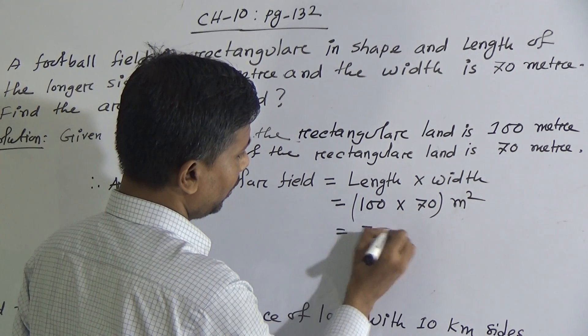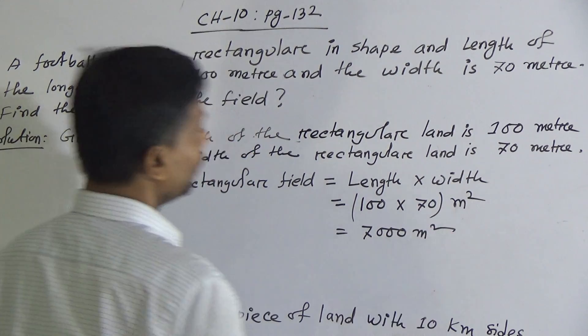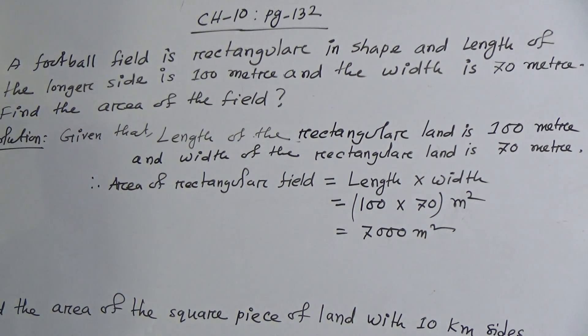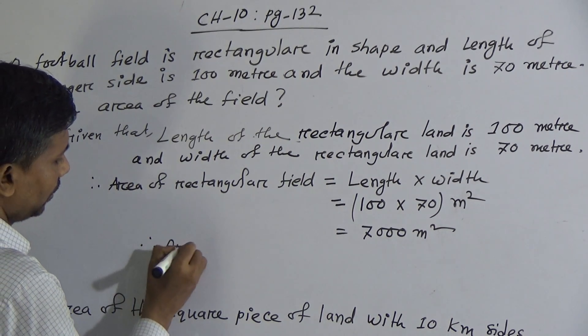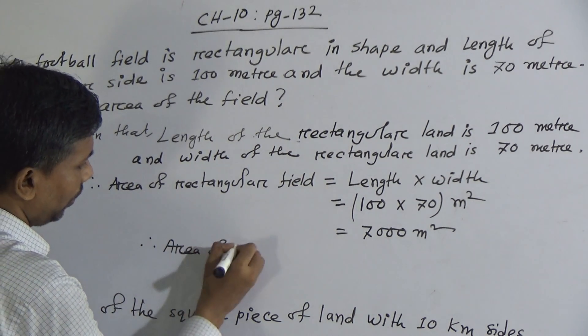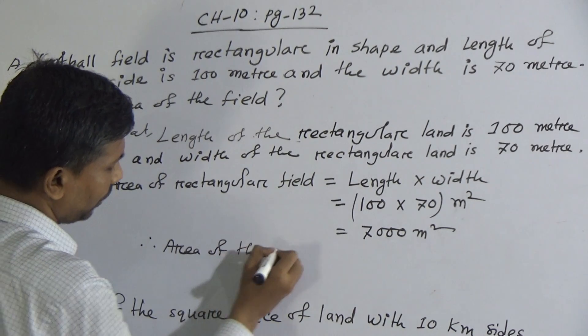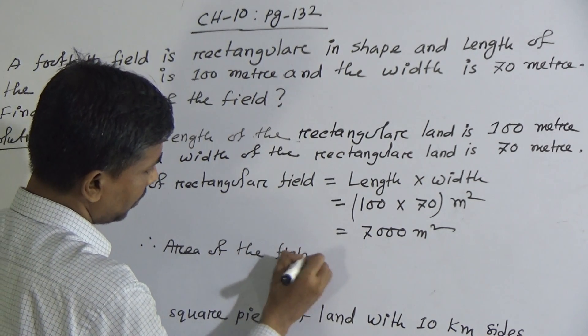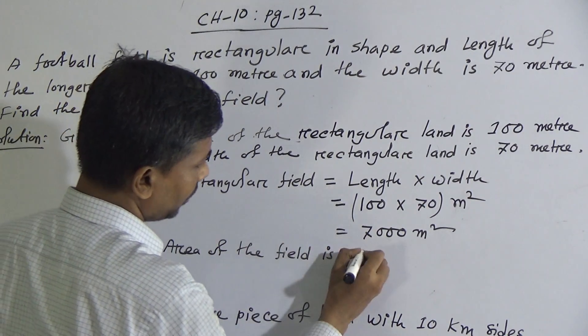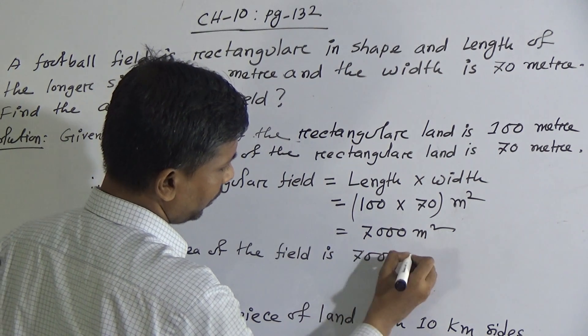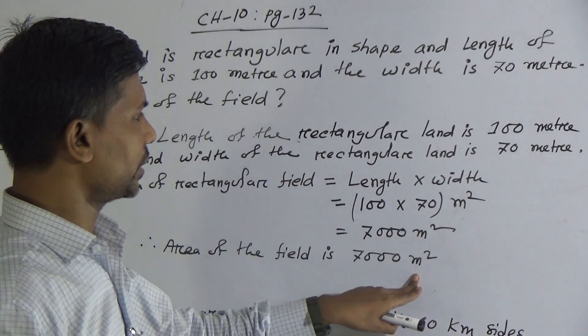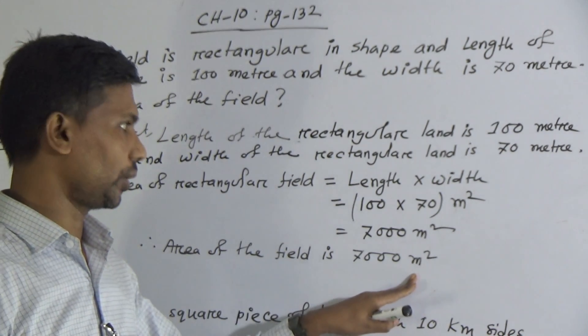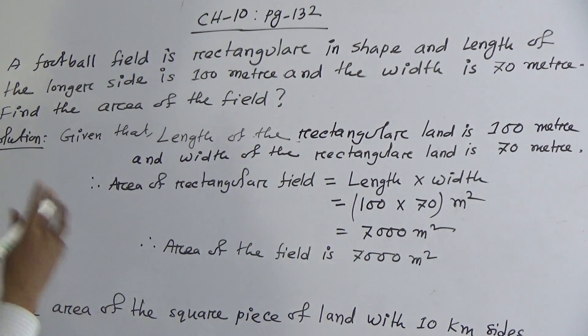Put this, and this is the area of the field. Now, write, area of the field is 7,000 square meter. M power 2, that means, this is called square meter. This is the required answer.